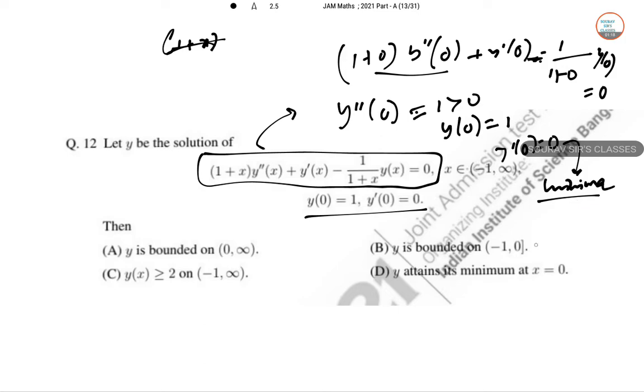So Y attains its minimum at X equal to 0. So D is the answer.